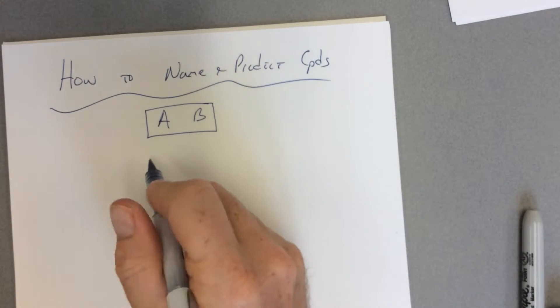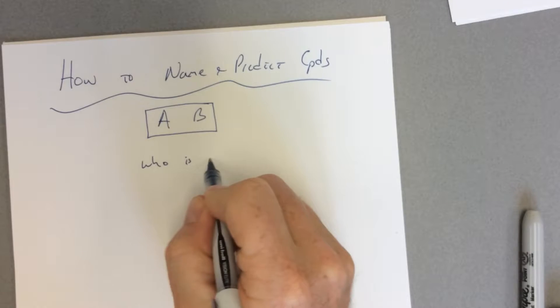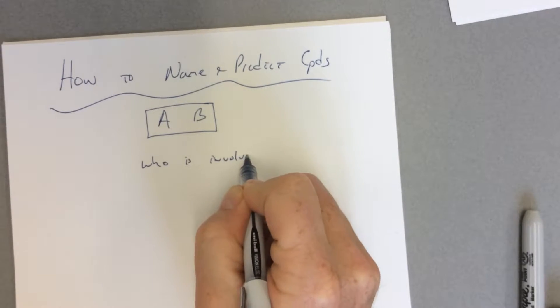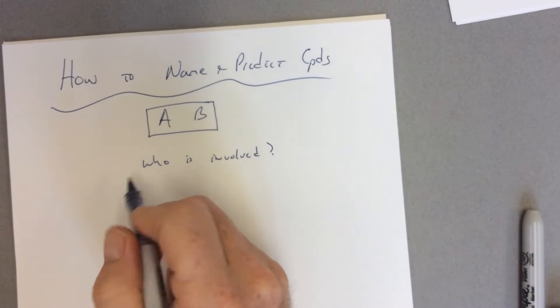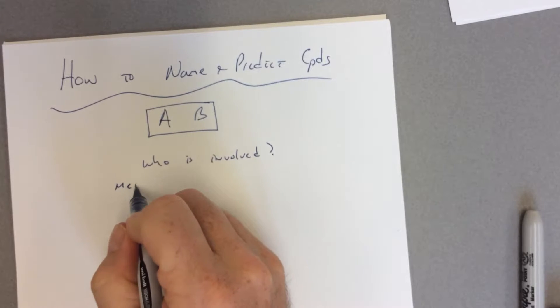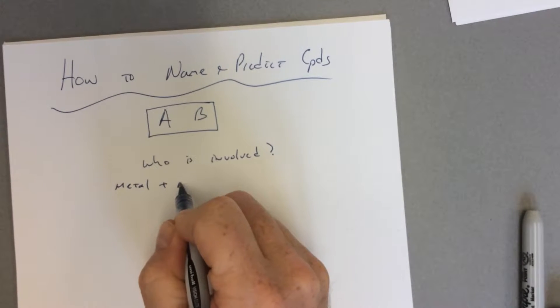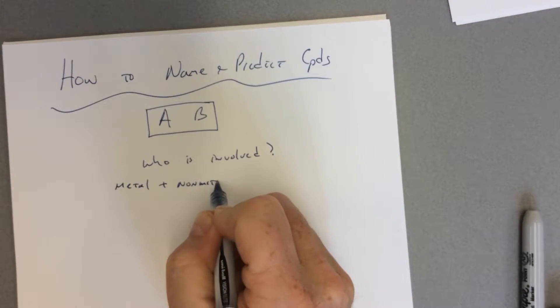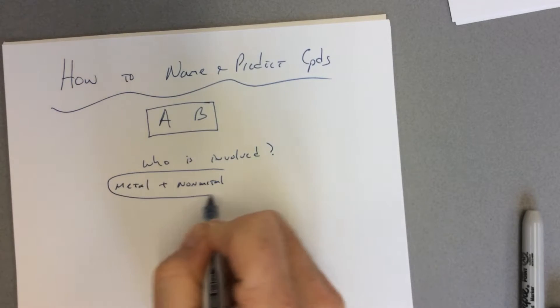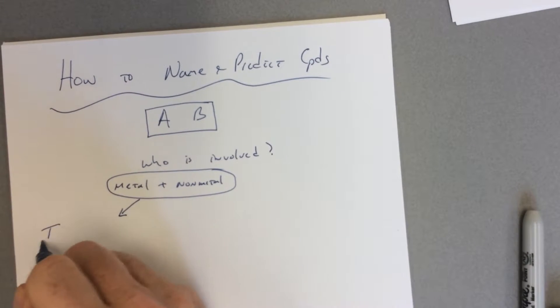If we have a metal plus a nonmetal, as soon as we see that situation we know we're going to go to our ionic steps.